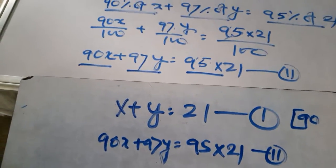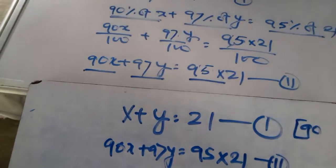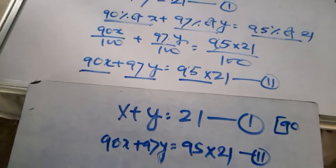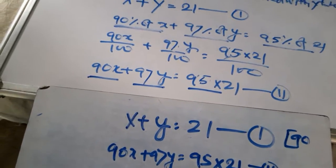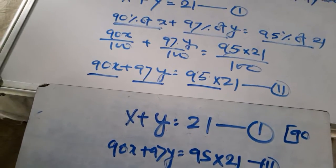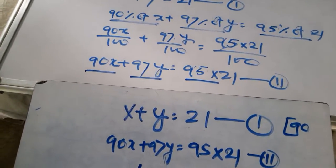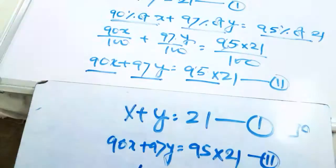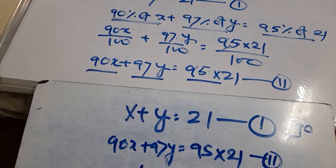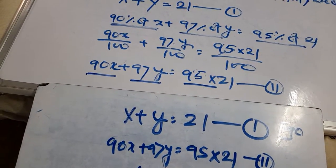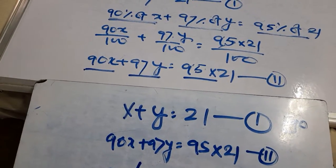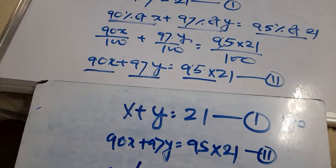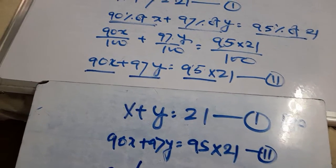Subtract the third equation from the second equation. The 90x terms cancel. We get 97y minus 90y equals 95 times 21 minus 90 times 21, which gives 7y equals 21 times 5.